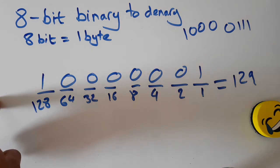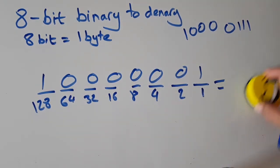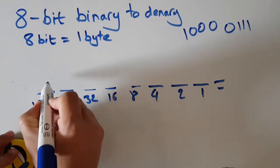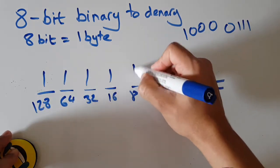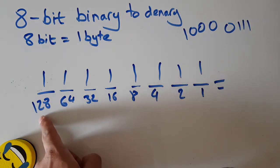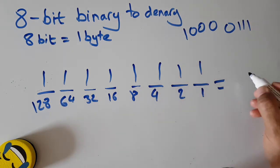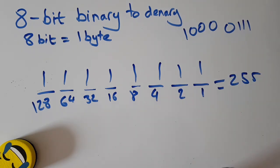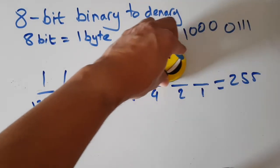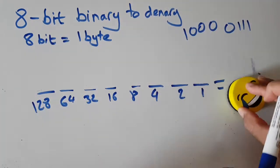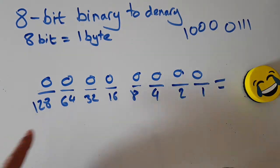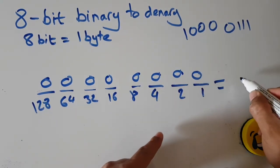You could do 9-bit, 10-bit, 11-bit if you wanted to. What is the highest number in 8-bit binary, or a byte? If I switch them all on, that's the highest number, and the answer is 255. What's the lowest? If I switch them all off, converting to denary gives zero.